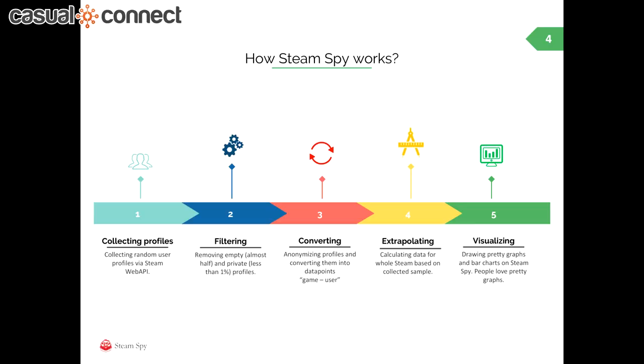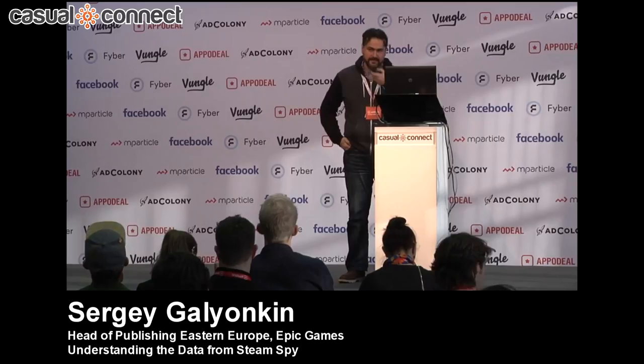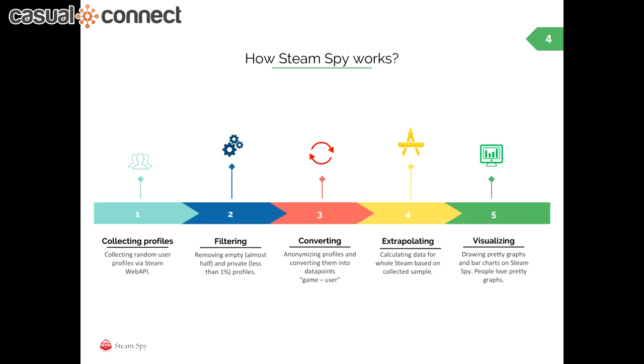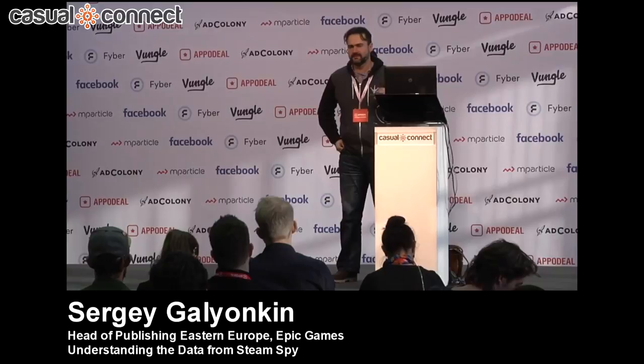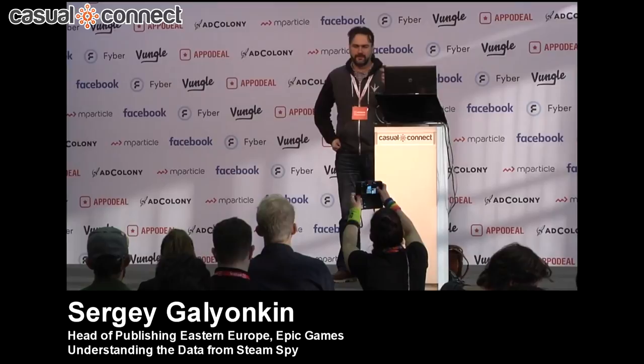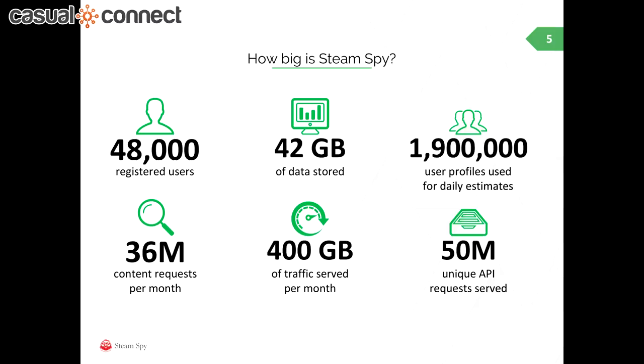I want to start with explaining how Steam Spy operates, because it's kind of important to understand all its limits and usage scenarios. It's based on estimating open user profiles — it basically scans through a random sample of 1.6 million Steam profiles out of 320 million, so less than half a percent of them, and assembles data through simple calculations and extrapolation including the margin of error. It's become quite large: 48,000 users, most of them use the website weekly, 42 gigabytes of data on my servers, almost a million profiles used for estimates.